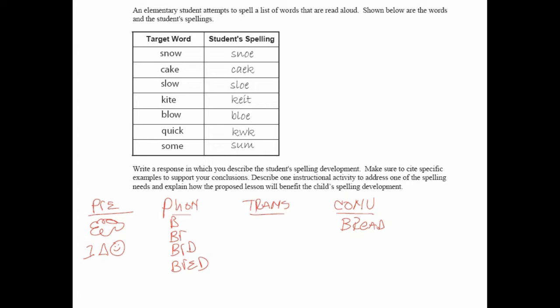Transitional spelling is quite simple. Transitional spelling is spelling by pattern, where they attempt a pattern but mess it up. For example, B-R-A-D-E would be an example of a transitional spelling, and so would B-R-A-E-D.